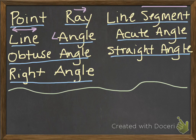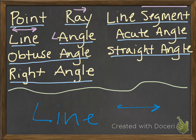Let's try another one: a straight path of points in a plane that continues without end in both directions with no endpoints. If you said line, you are correct — continues in both directions with no endpoints.